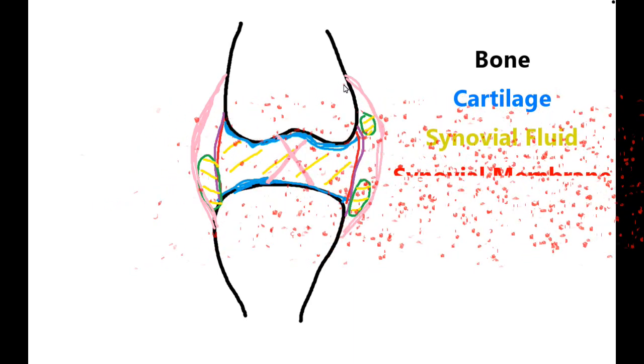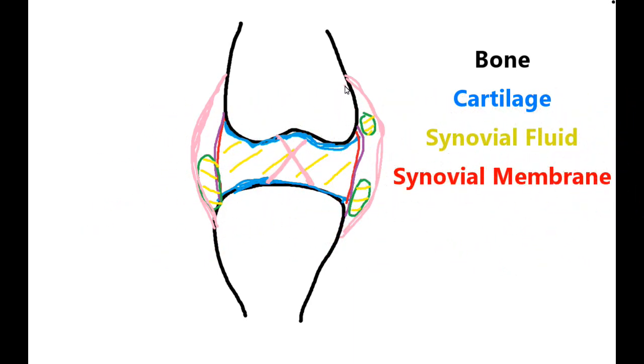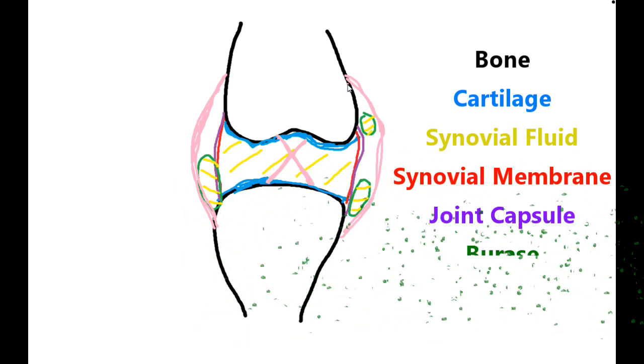So just recapping: we've got the black bones there, and on the ends of those bones we have the blue cartilage. In between, or within this cavity, we have synovial fluid—that yellow synovial fluid that I put there—which is secreted by the synovial membrane, which is the red line. The synovial membrane is attached to, or lines, the inside of the joint capsule, which I put in purple.